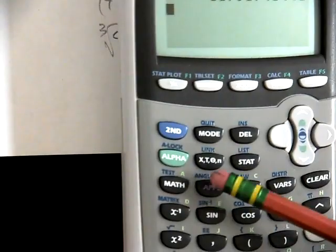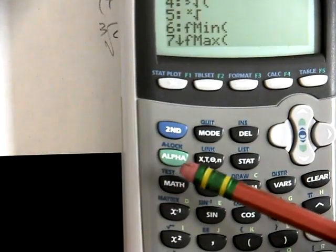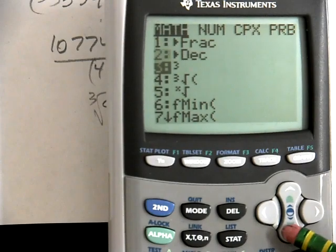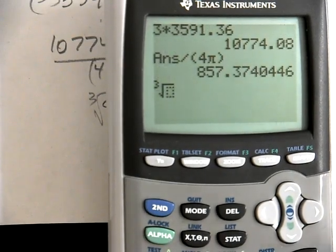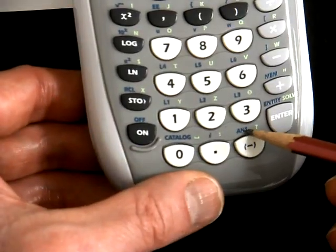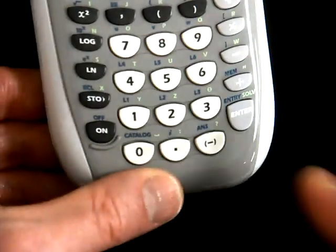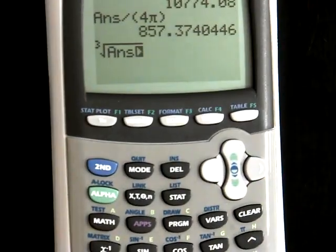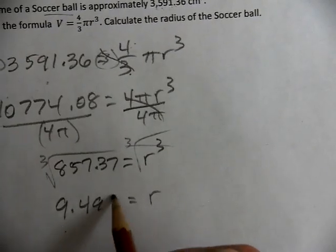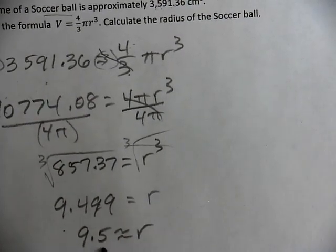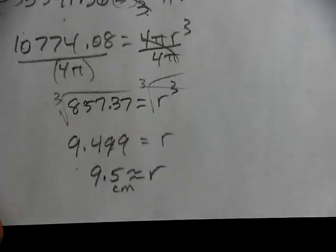We go to the math button. And we pick the cubed root in this case, which is 4. And hit enter. So the cubed root, now answer button is down here. A-N-S. So I'm going to hit second, answer. That puts the A-N-S. That means your previous answer. We're going to that spot. You don't have to type it in. Hit enter. We get 9.499, which is approximately 9.5 centimeters.